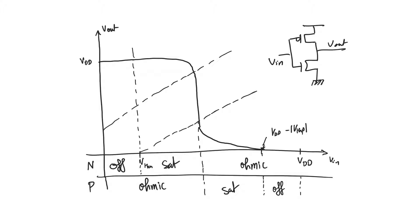Let's take a look at the VTC again. It consists of the NMOS being cut off all the way up to V-threshold N, then it turns on in the saturation regime, then it becomes ohmic. The PMOS does exactly the opposite as its gate voltage decreases from VDD down to ground. The region where the PMOS is saturated lies below this line, and the region where the NMOS is saturated lies above this line, and thus there is a range in the middle where both are saturated — and we found in the previous video that this range is actually a single value for V-input. It's really important to note the regions of operation of the two transistors on the VTC, because it really helps when we try to obtain important points on the VTC.